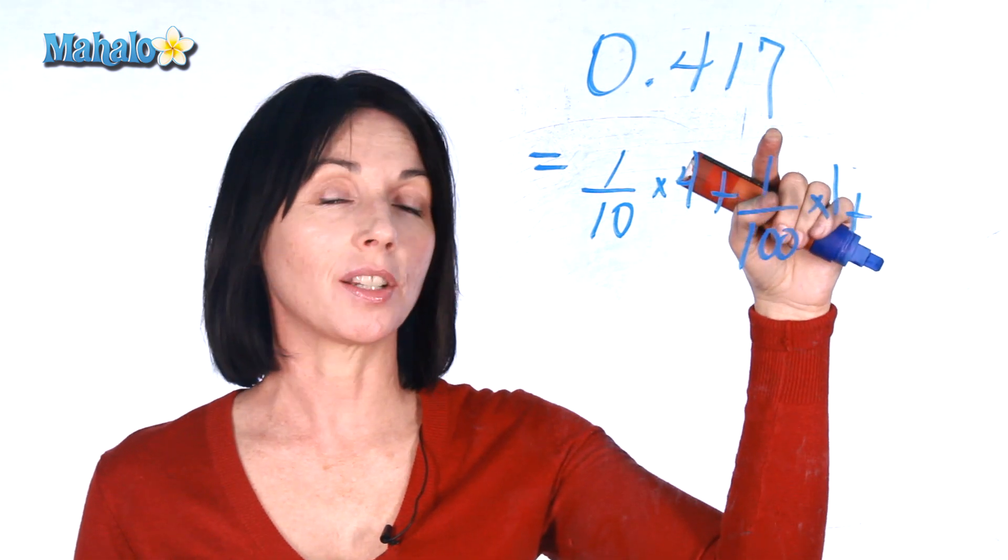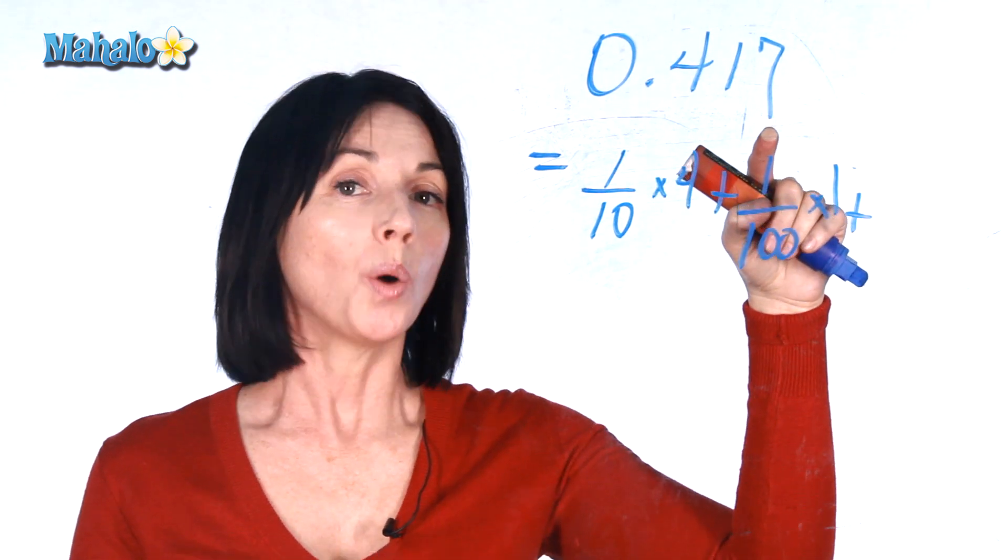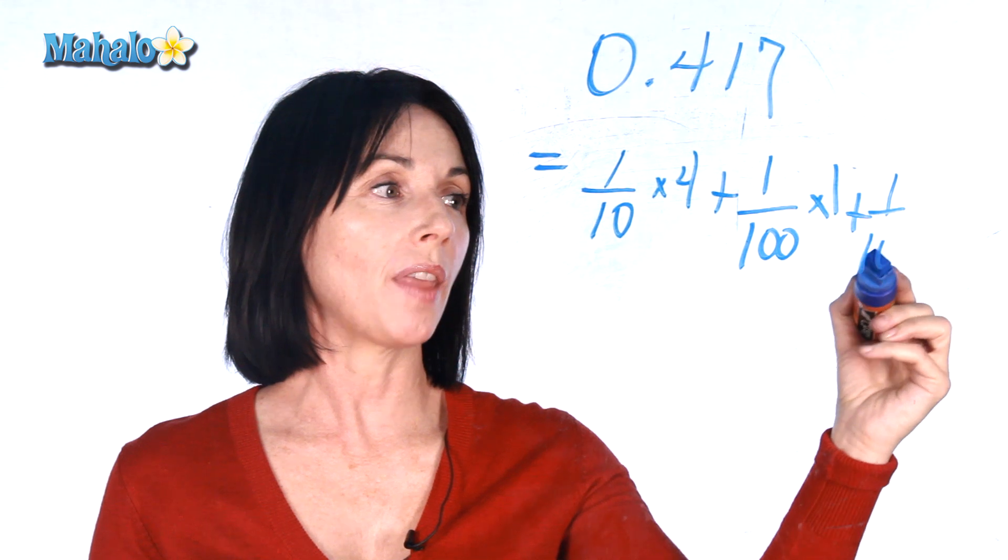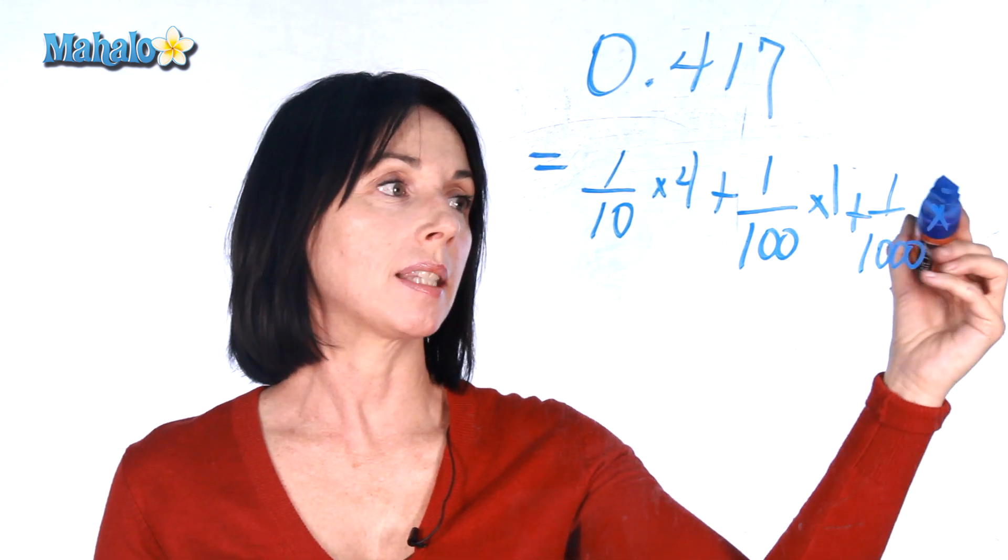And then in this position, the thousandths position, we're actually dividing by 1,000. So we have 1 over 1,000 times 7.